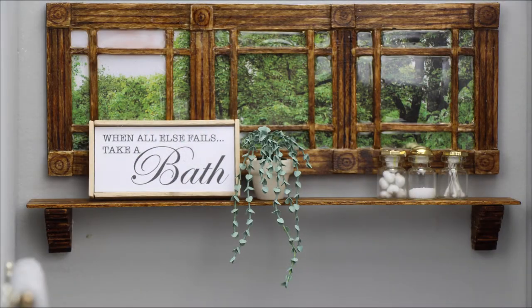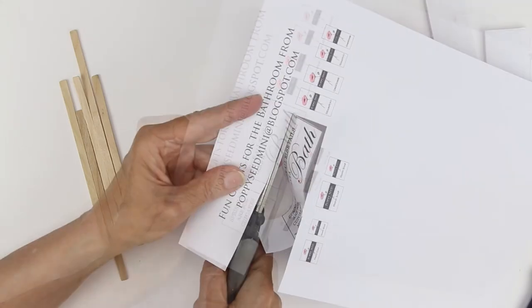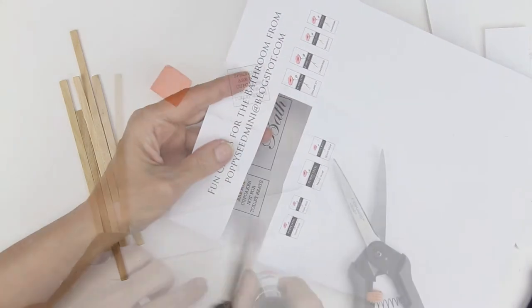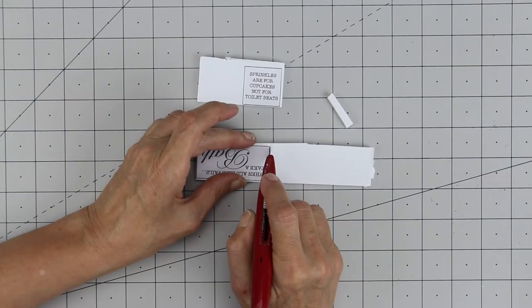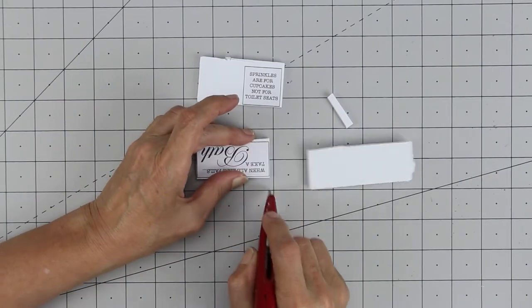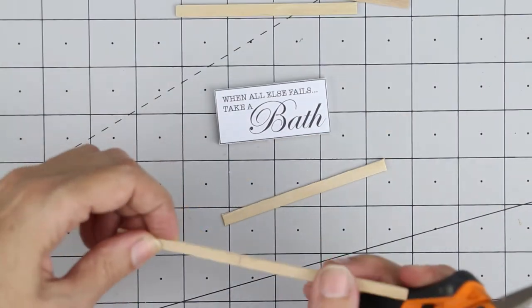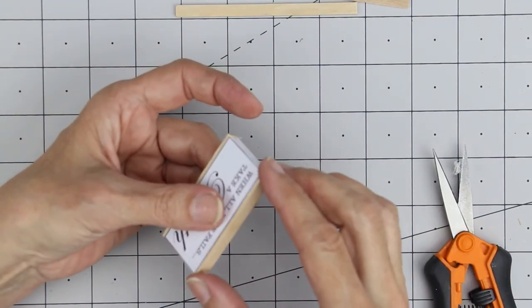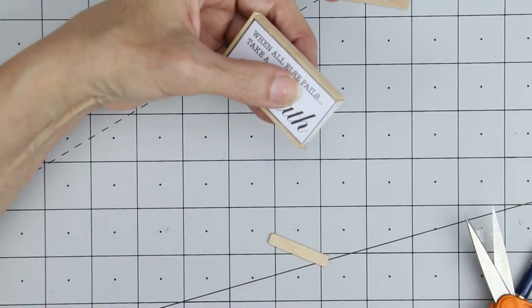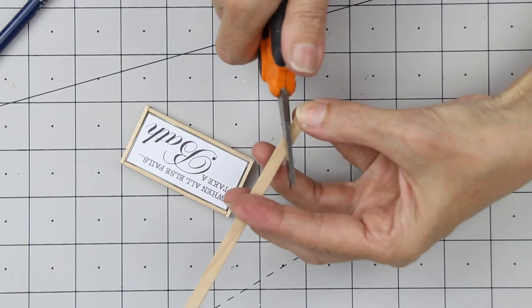To make some cute signs for the bathroom, print out our free printable. The link is in the description box below. Cut out the signs. Glue on foam board. Then take and cut skinny sticks for the frame. Glue on the top and the bottom first. Then glue on the sides. Take another skinny stick to make a stand for the back.